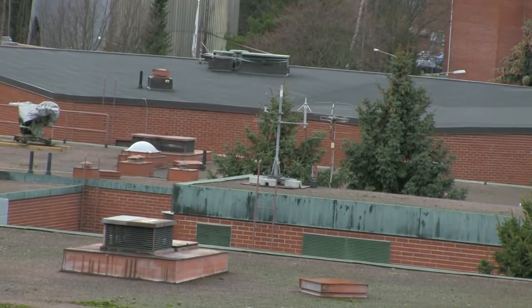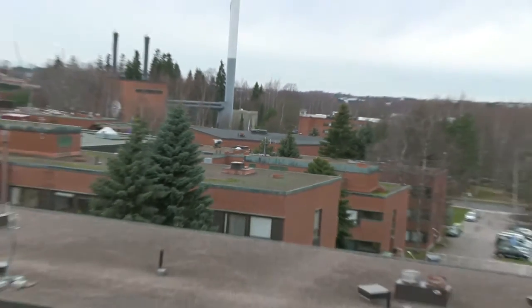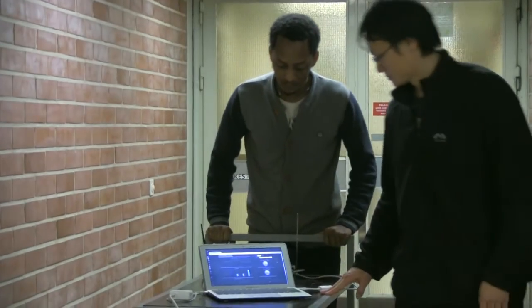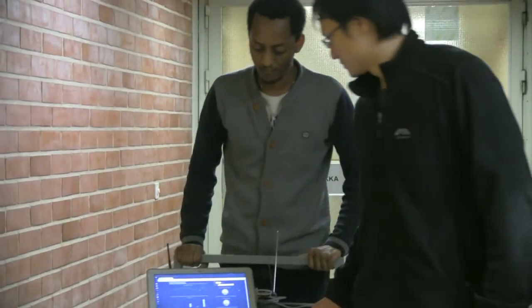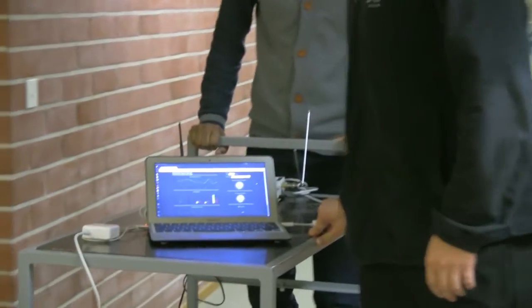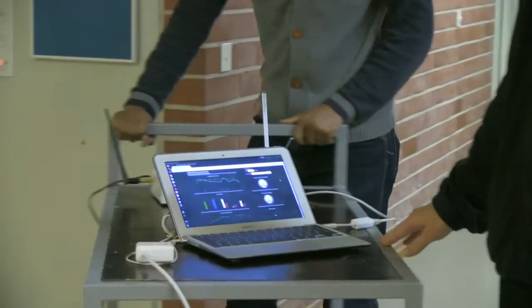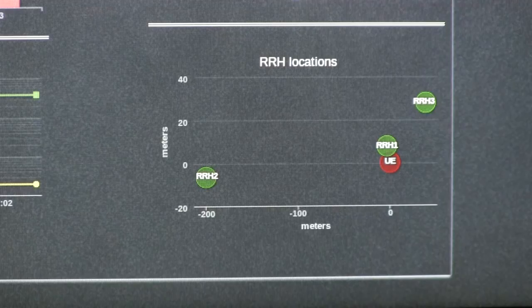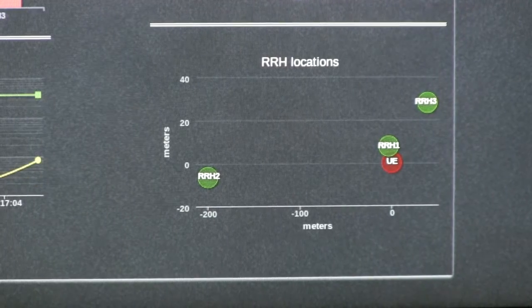Since we have implemented baseband processing in software, we have access to the LTE frame structure. We have reconfigured LTE subframes for different transmission schemes. For signal reception, we have implemented an LTE receiver. The signal is transmitted from the remote radio head and we perform indoor measurements.